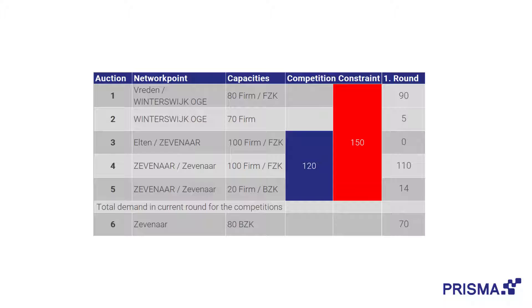Now, in a normal auction situation, auctions 2 and 5 would close due to under-demand. But because auction 2 is part of the bigger competition constraint and auction 5 of the smaller competition constraint, the auctions continue until these constraints are fulfilled.